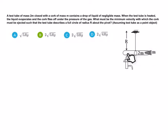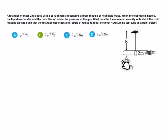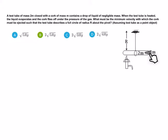यह test tube cork से closed है। इसके अंदर एक liquid है जिसका negligible mass है। उसको हम लोग इस candle की मदद से heat कर रहे हैं, और जब वो heat हो जाएगा तो वहाँ पर उसके vapors create होंगे। Due to this vapor pressure यह जो cork है यह बाहर move होगा, और यह test tube इस तरह से circle perform करेगा।